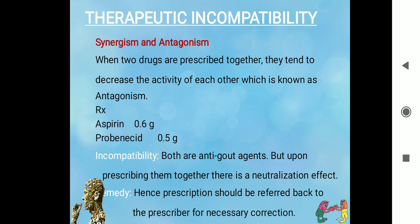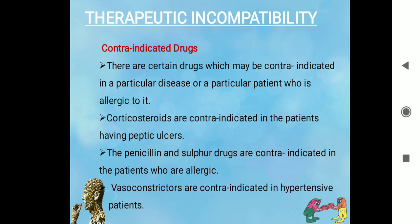The correlated concept is antagonism. When two drugs are prescribed together and they tend to decrease the activity of each other, it is known as antagonism. Such prescriptions should be referred back to the prescriber for necessary correction. For example, aspirin and probenecid are both used in the treatment of gout, but when these two anti-gout agents are prescribed together there is a neutralization effect — acetylsalicylic acid and probenecid neutralize each other. The remedy is to refer the prescription back to the prescriber.